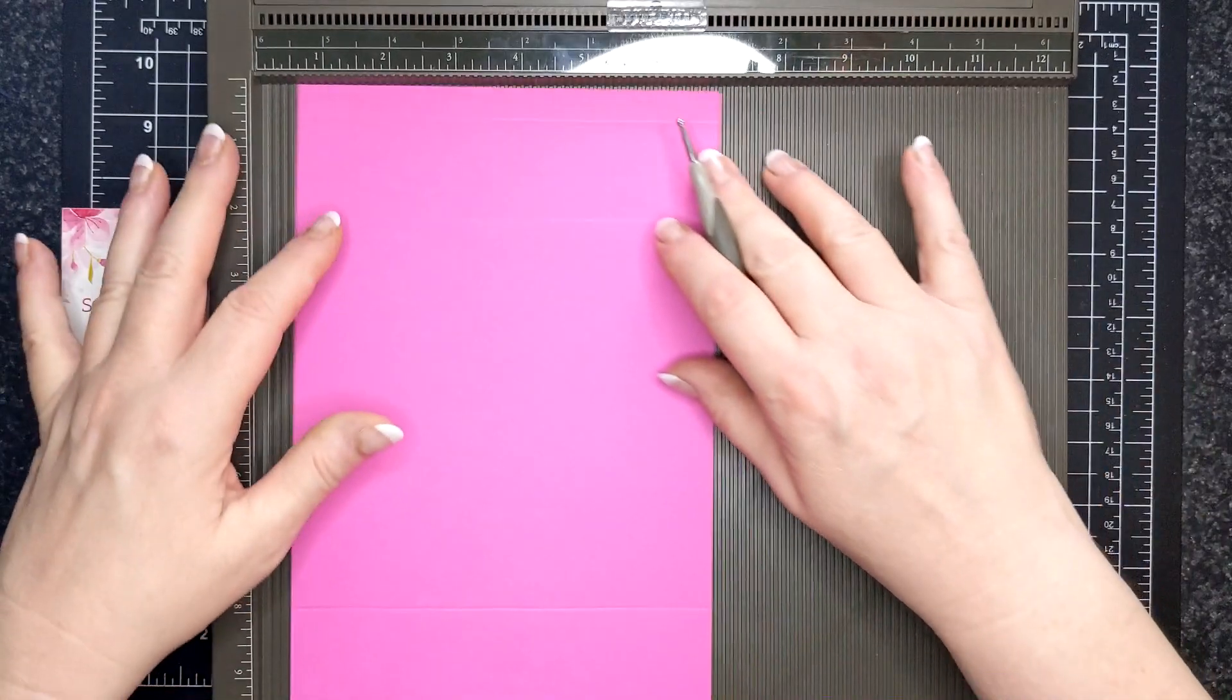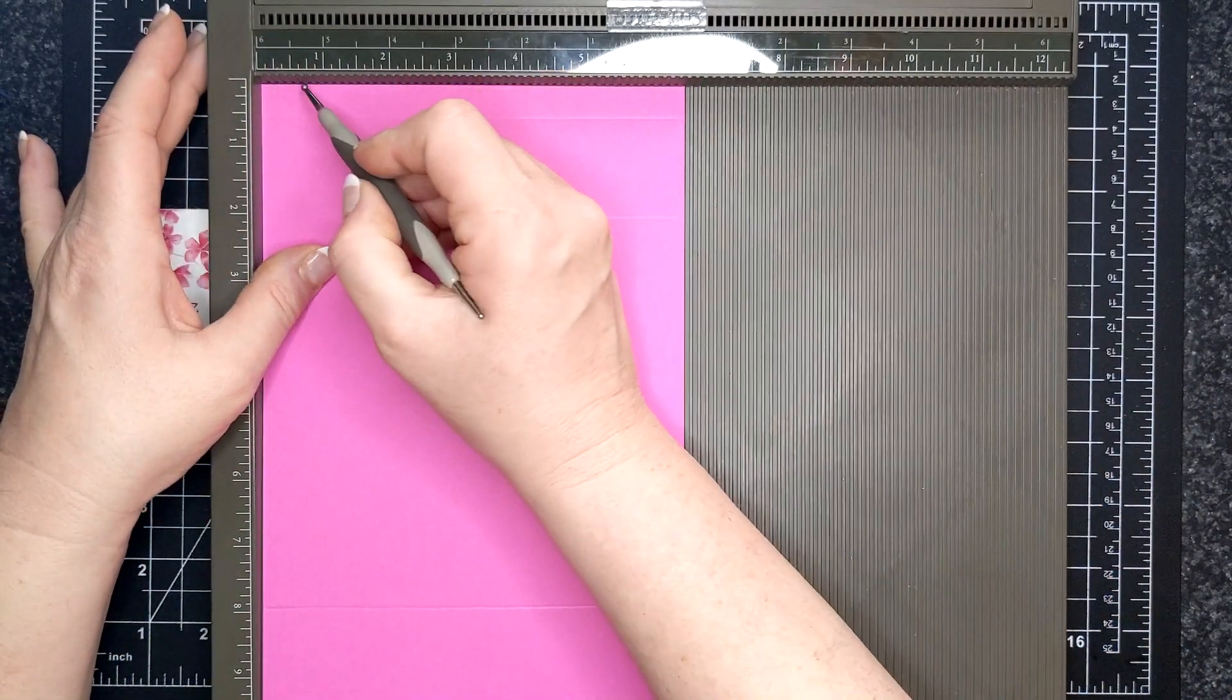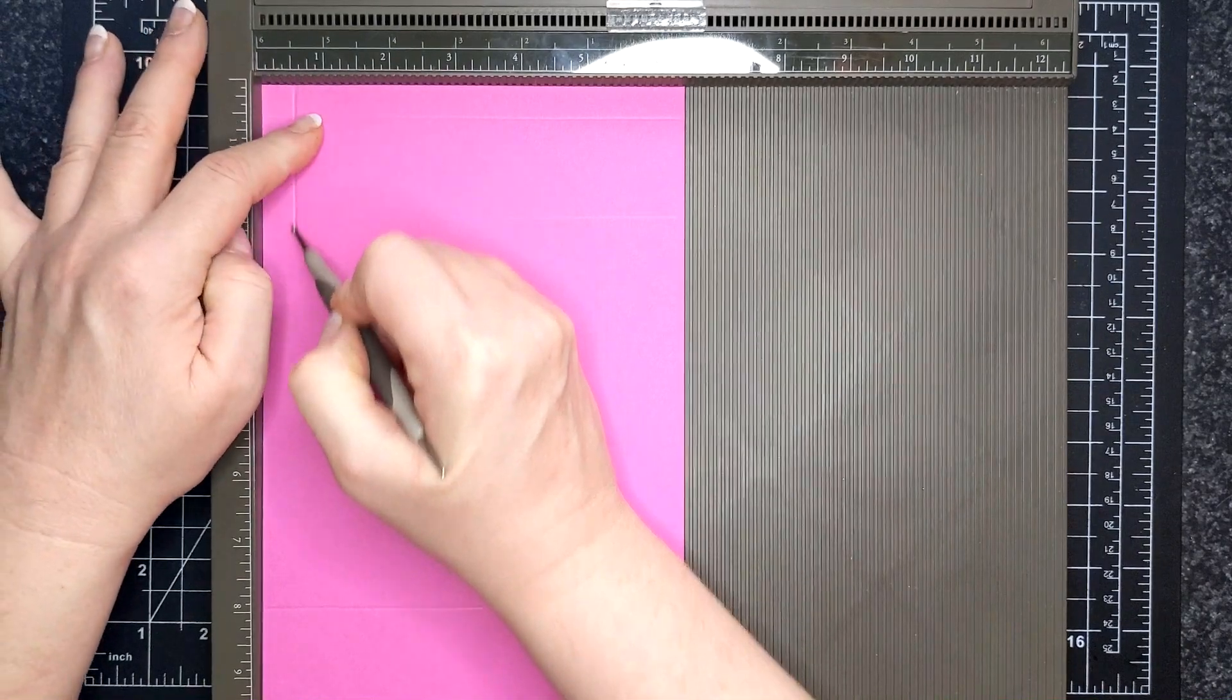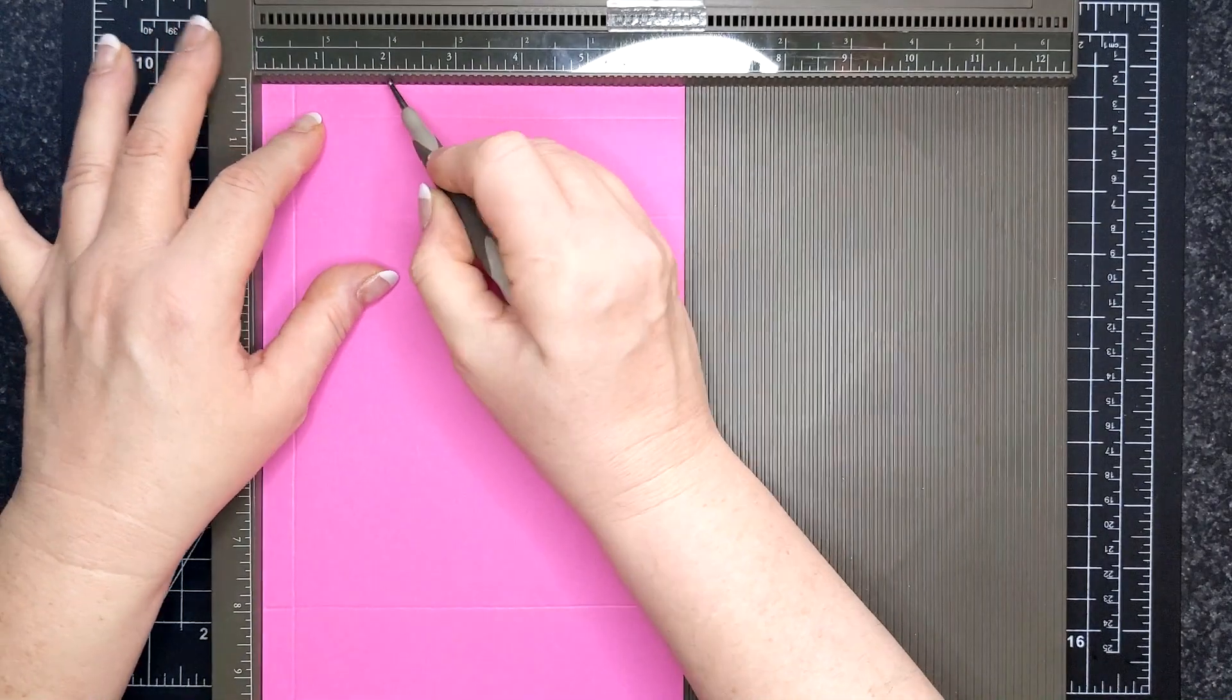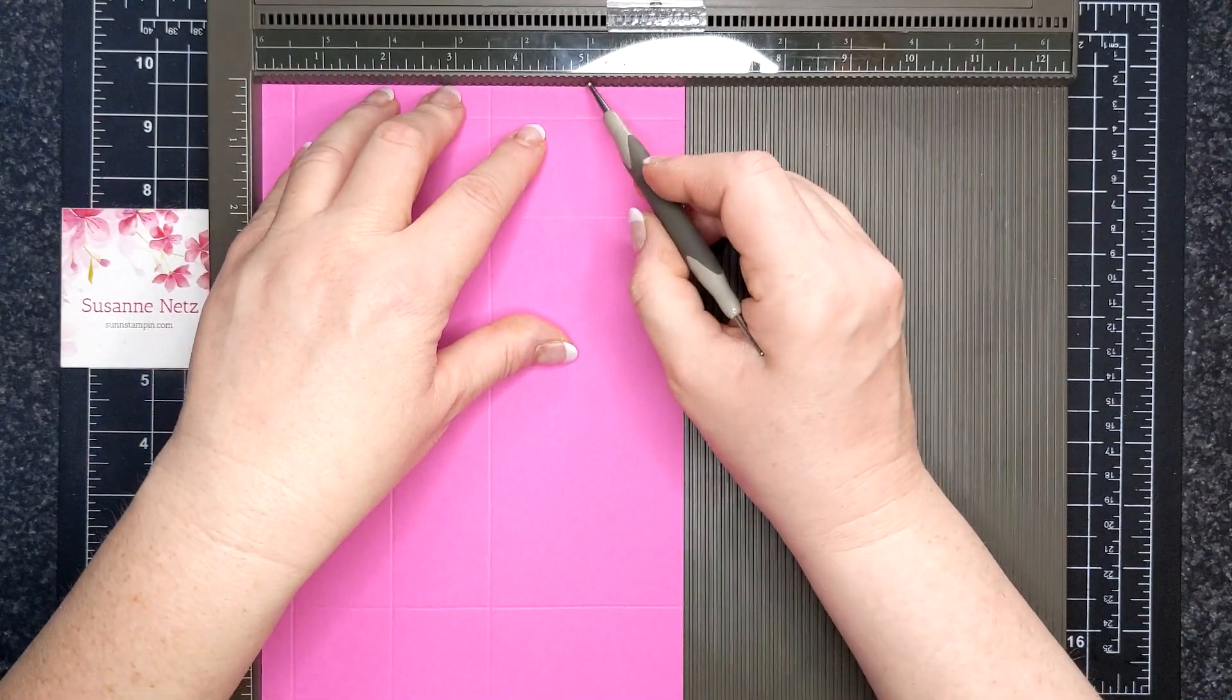I'm going to turn it round and we are going to score at a half, 2, 3.5, and 5.